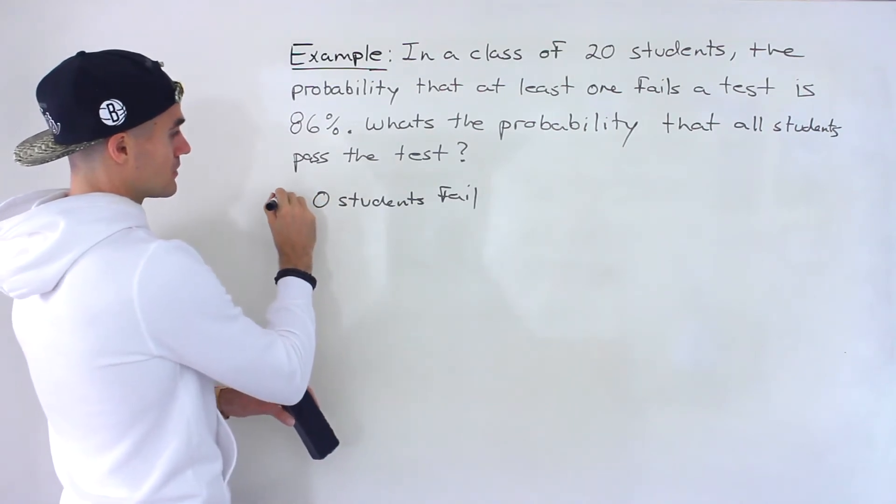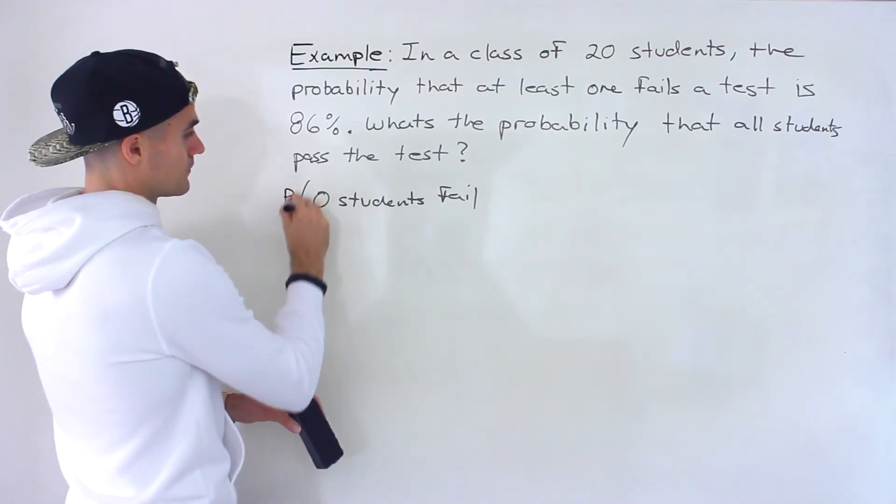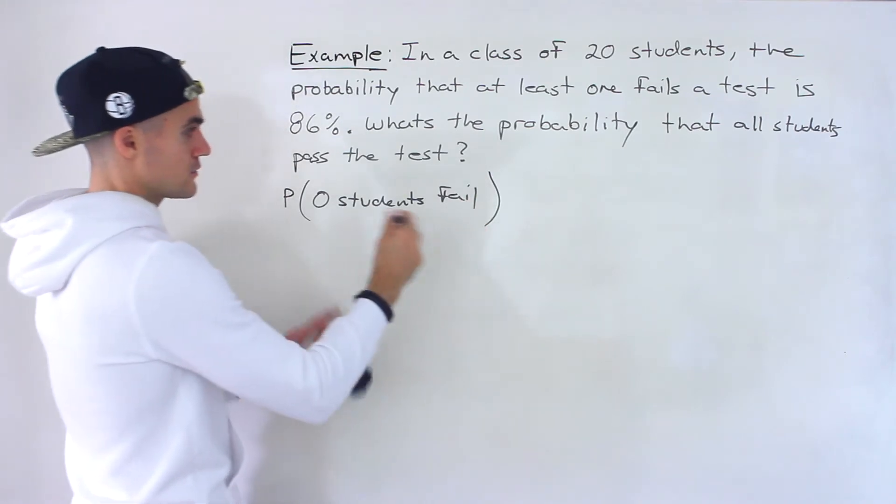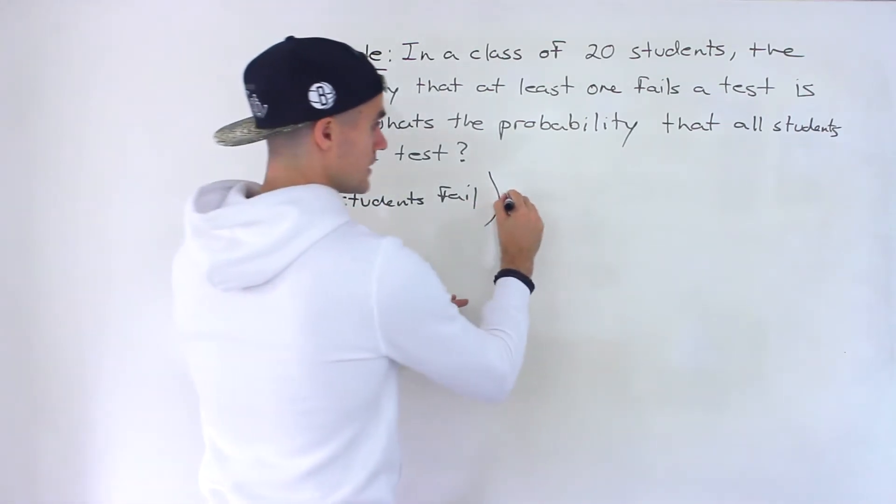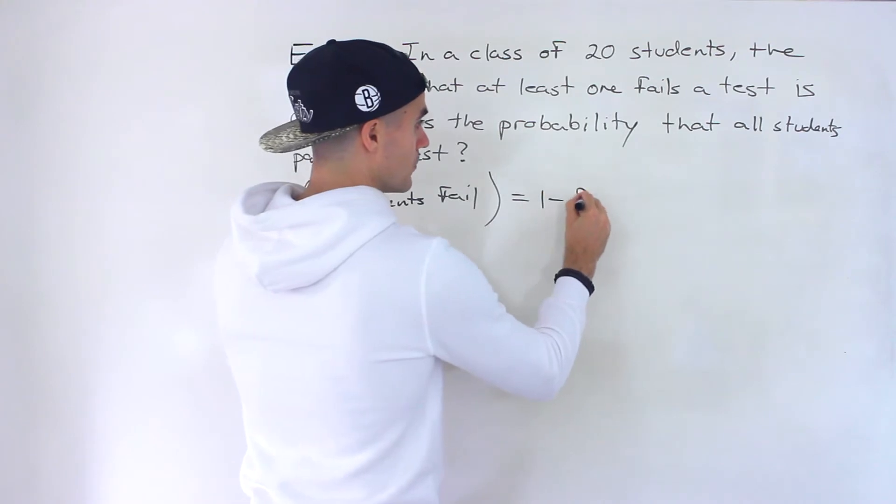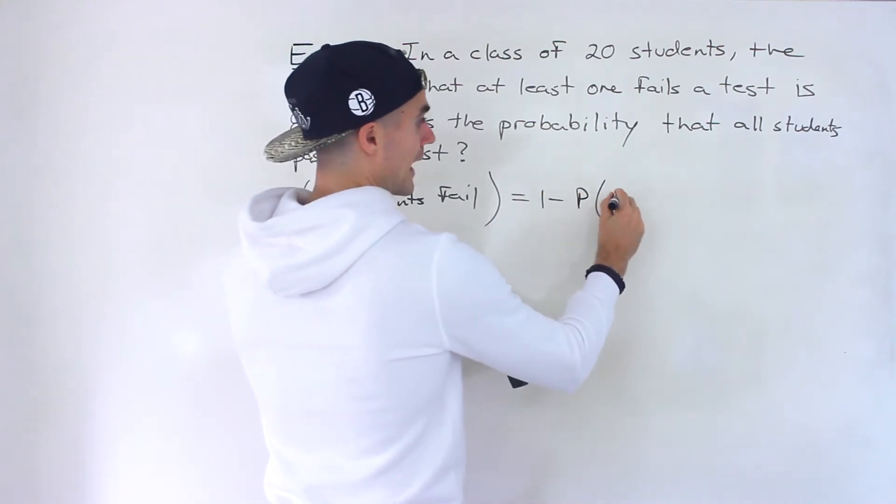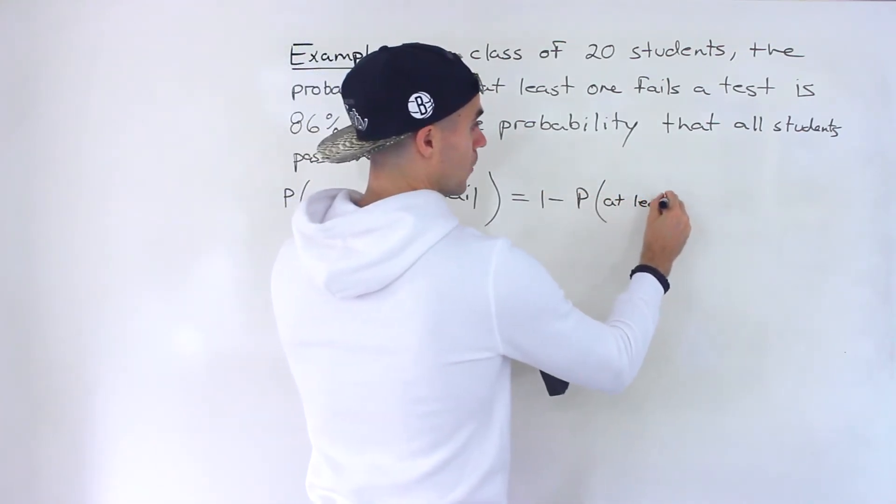And so if you think about it, the probability that zero students fail is equal to one minus the probability that at least one fails.